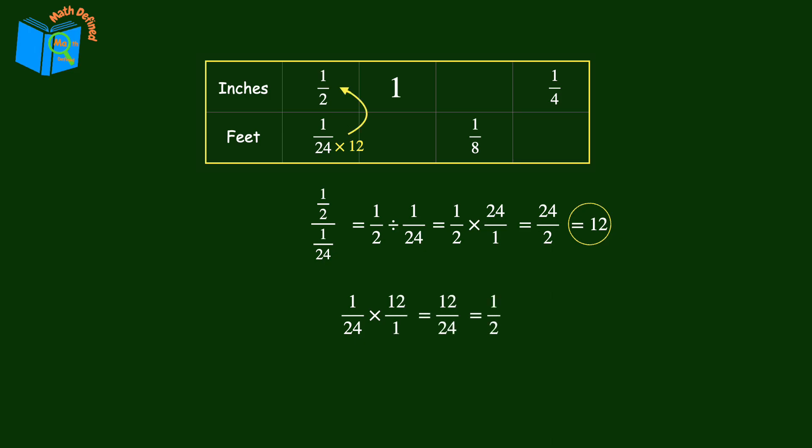The next ratio in the table is 1 inch to how many feet? Or what times 12 is equal to 1? We can use division to find the answer. 1 divided by 12. Then multiplying by the reciprocal, we get 1 12th.